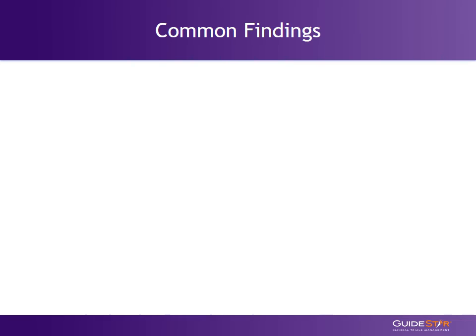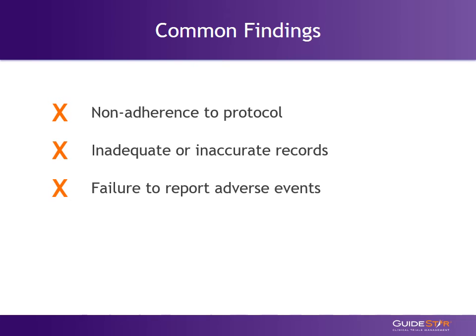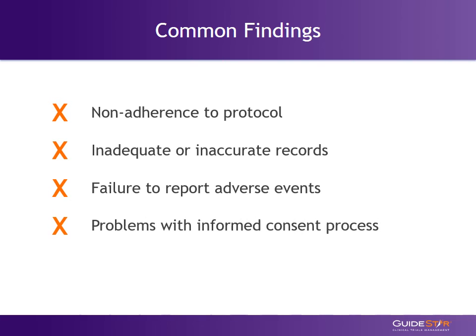Some common findings as a result of an FDA inspection include non-adherence to protocol, inadequate or inaccurate records, failure to report adverse events, problems with the informed consent process, and issues with IRB approvals.